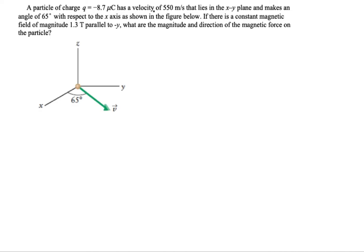The problem says a particle of charge negative 8.7 microcoulombs has a velocity of 550 meters per second, and that velocity lies in the xy plane, making an angle of 65 degrees with respect to the positive x-axis, as shown.